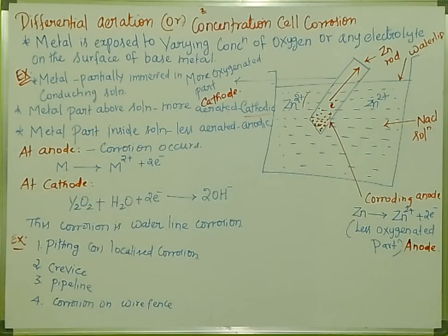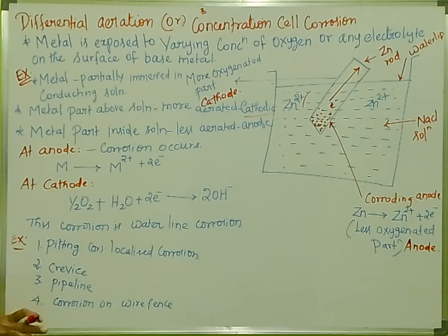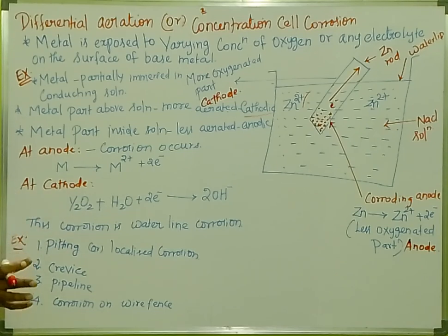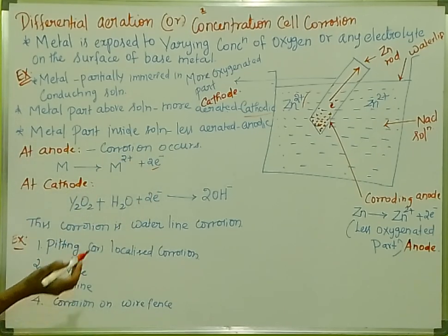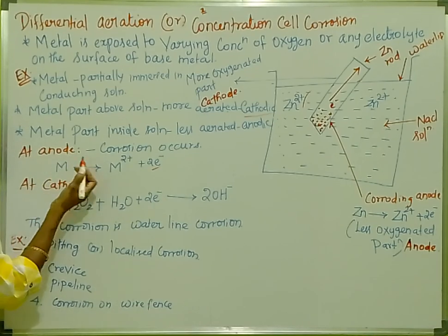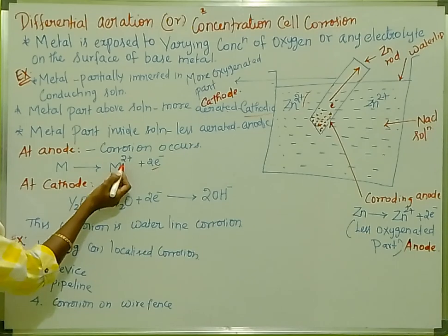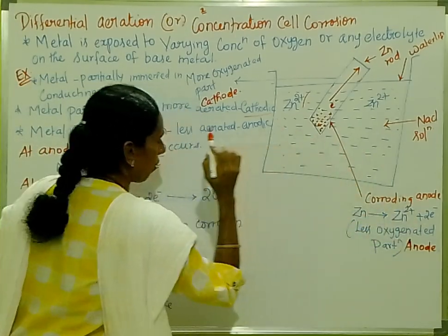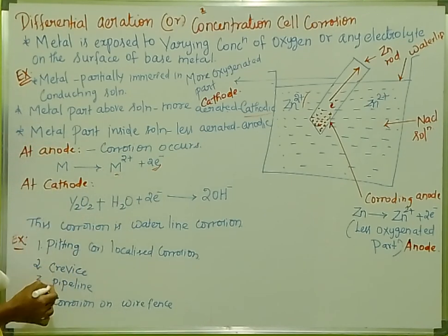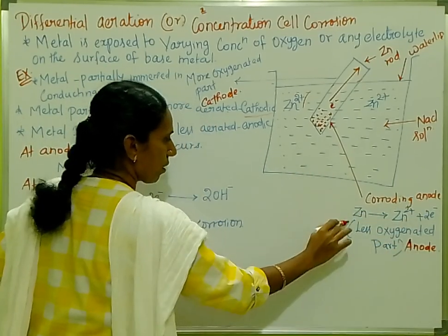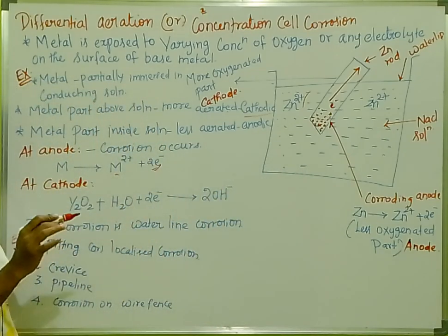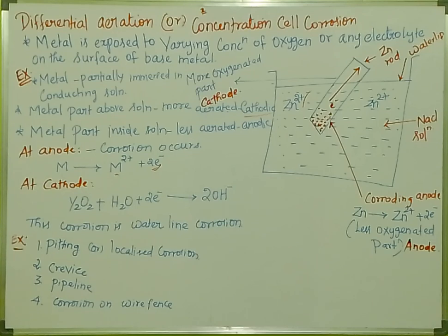Now, the reactions are the same as in the last two videos. In the anodic area, corrosion occurs. Oxidation is the loss of electrons — this is the release of electrons from the metal. Zinc loses electrons: Zn → Zn²⁺ + 2e⁻. This is the anodic reaction. Anode means oxidation, and this is the less oxygenated part.